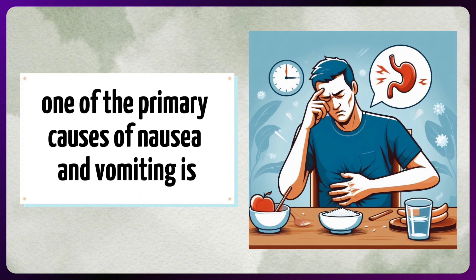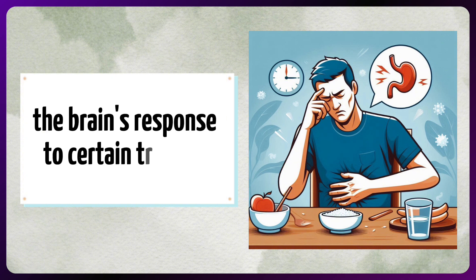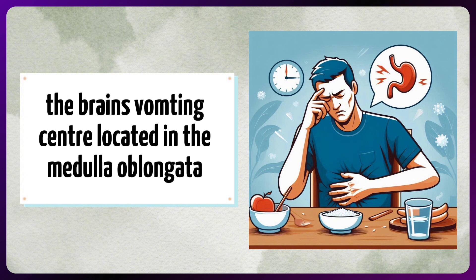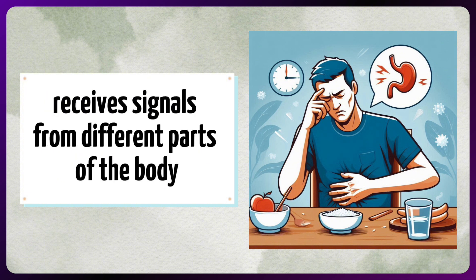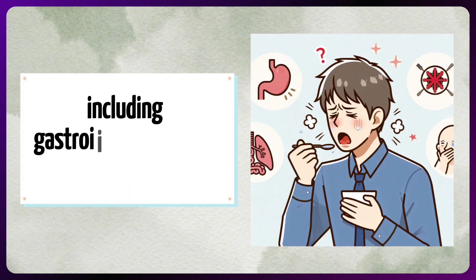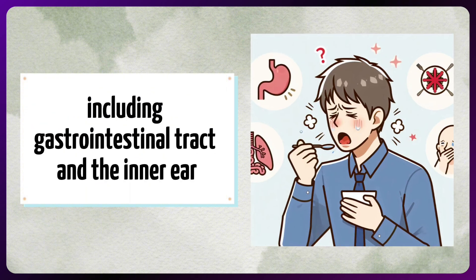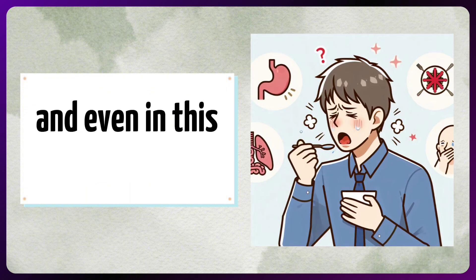One of the primary causes of nausea and vomiting is the brain's response to certain triggers. The brain's vomiting center, located in the medulla oblongata, receives signals from different parts of the body, including the gastrointestinal tract, the inner ear, and even the cerebral cortex.